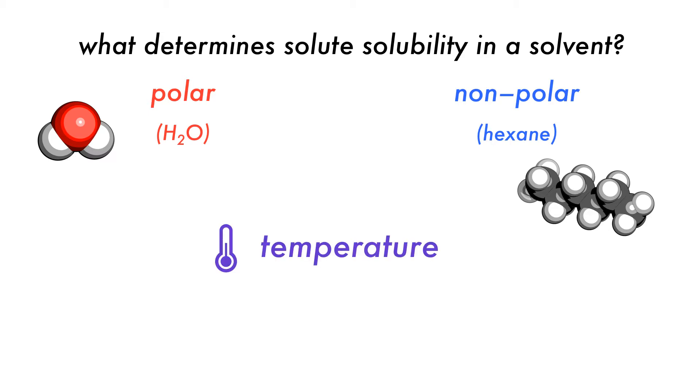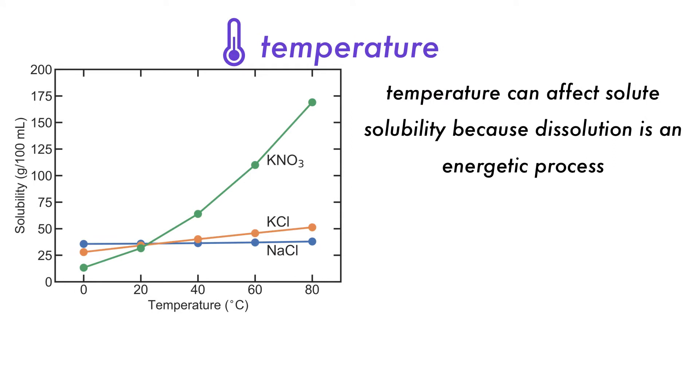They are temperature of the system and pressure of the system. Dissolution or solvation is an energetic process. This means that temperature, which is a form of energy, can affect the solubility of a solute.